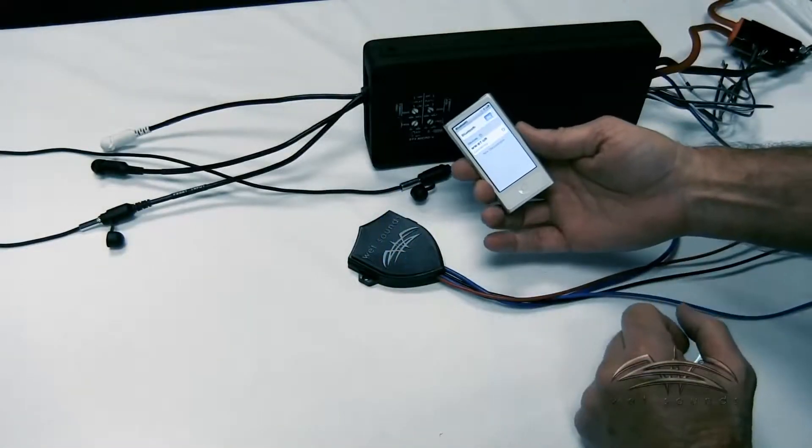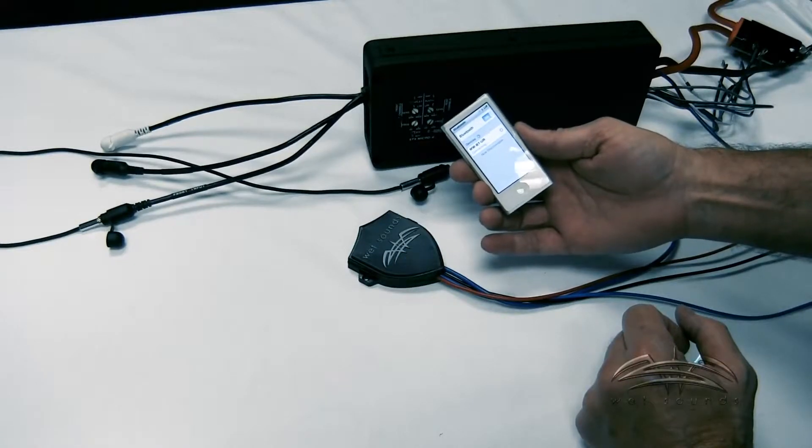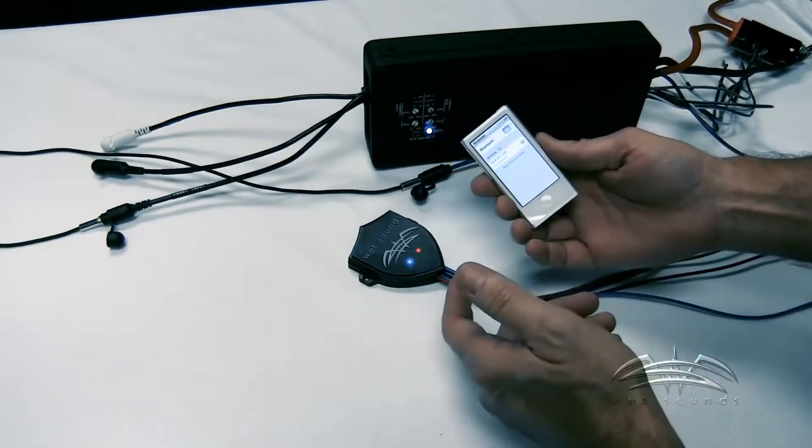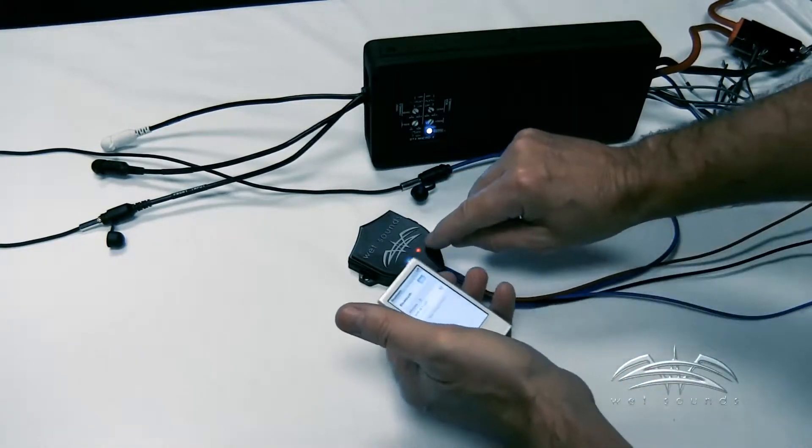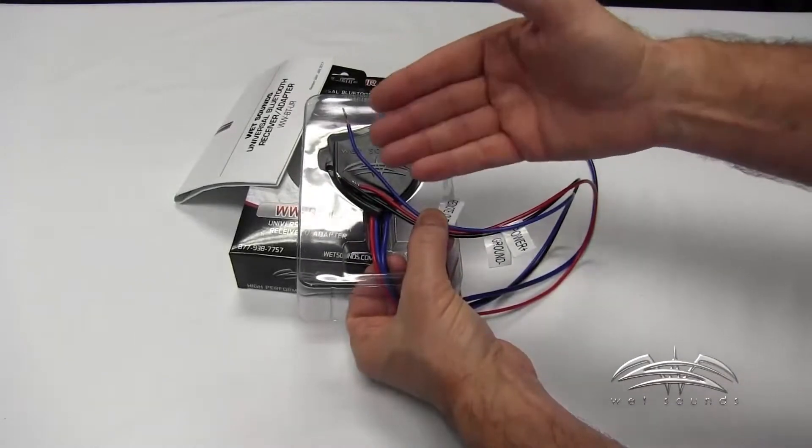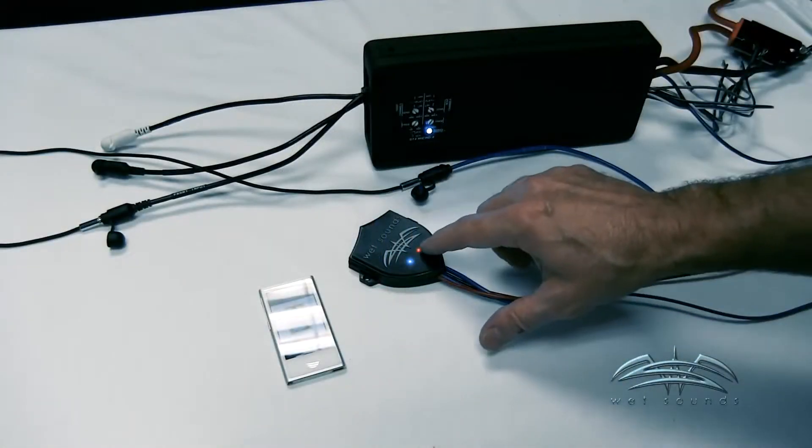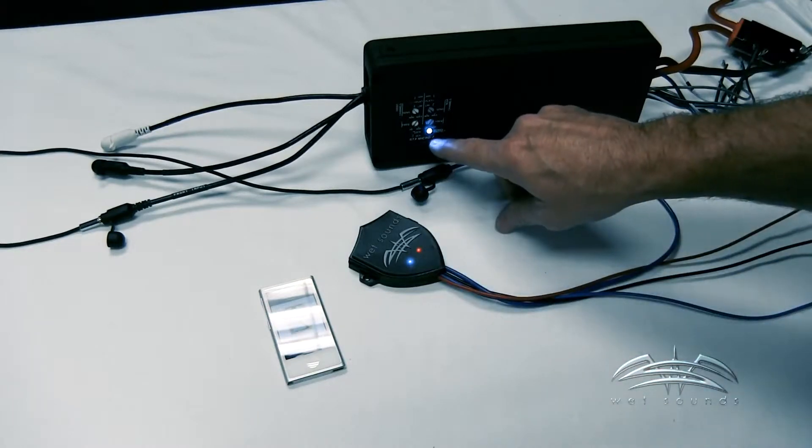What happens on this is once your Bluetooth device is in play mode, it will send 12 volts out to here to automatically turn on your amplifier. On the other hand, when you press pause, and it's paused for more than 15 or 20 seconds, it will automatically kill the 12 volts going out to here, which will shut down the amplifier.